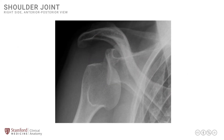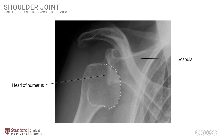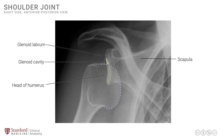Looking at a second AP x-ray of the same right shoulder, we can trace the scapula, the hemispherical head of the humerus, and the glenoid cavity. Unlike the previous x-ray where the head of the humerus and glenoid cavity articulated congruently, here they appear displaced — the head of the humerus overlapping away from the glenoid cavity. The glenoid labrum is not visible as it is fibrocartilaginous, but its location can be estimated at the margin of the glenoid cavity.